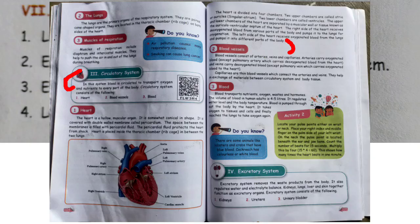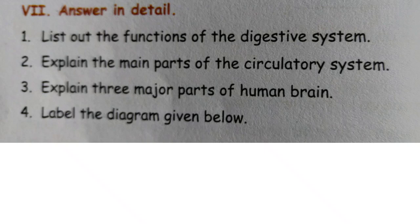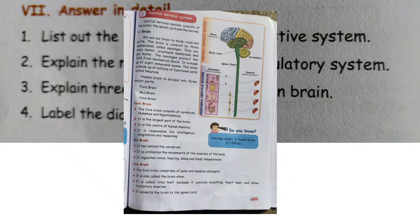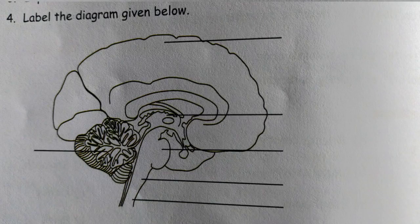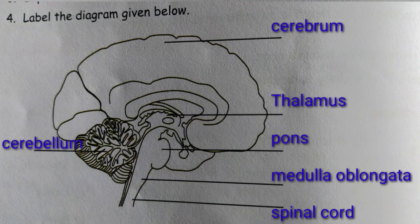Next, Section 7: Answer in detail. Question 2: Explain the main parts of the circulatory system — refer to pages 104 and 105. Question 3: Explain the 3 major parts of the human brain. The three major parts are forebrain, midbrain, and hindbrain — refer to page 107. Question 4: Label the diagram of the brain. Parts include cerebrum, thalamus, pons, medulla oblongata, spinal cord, and cerebellum.